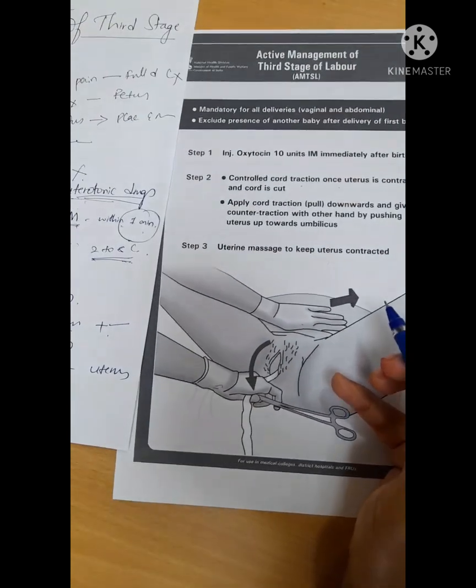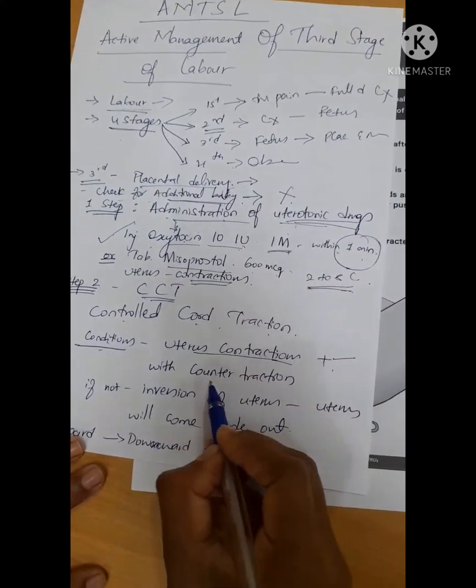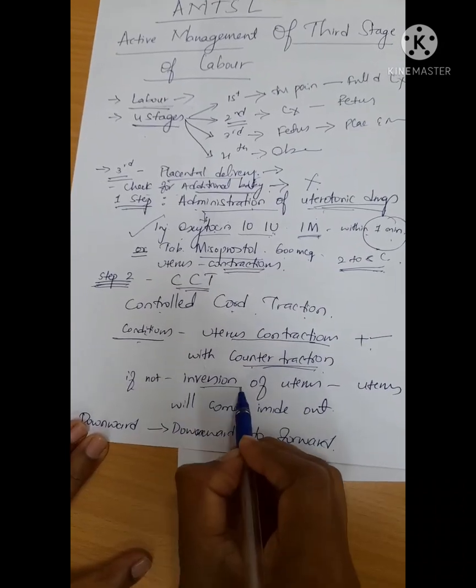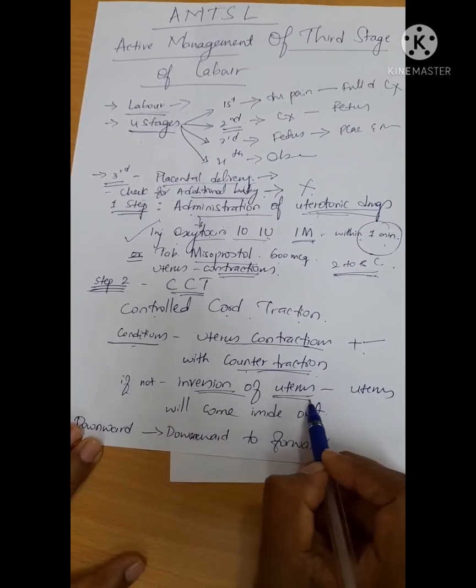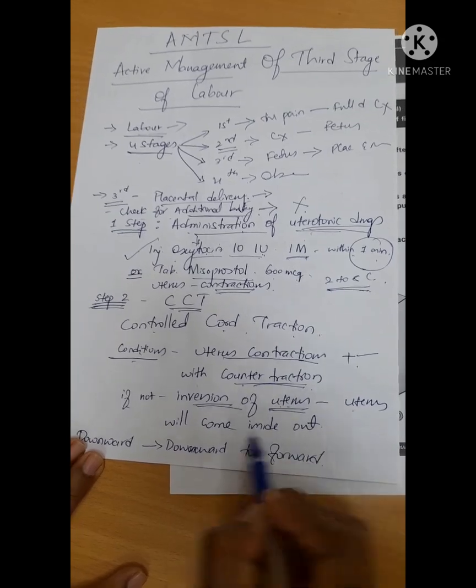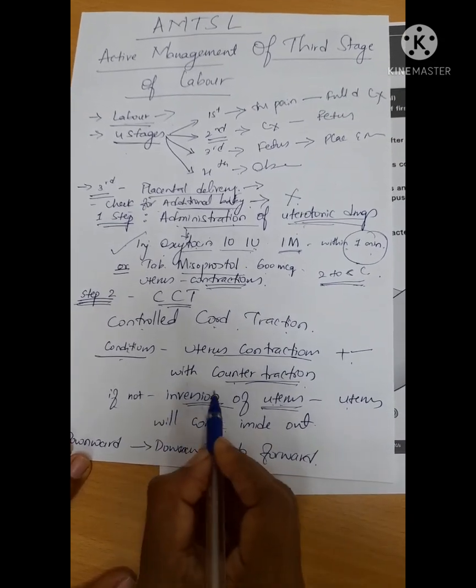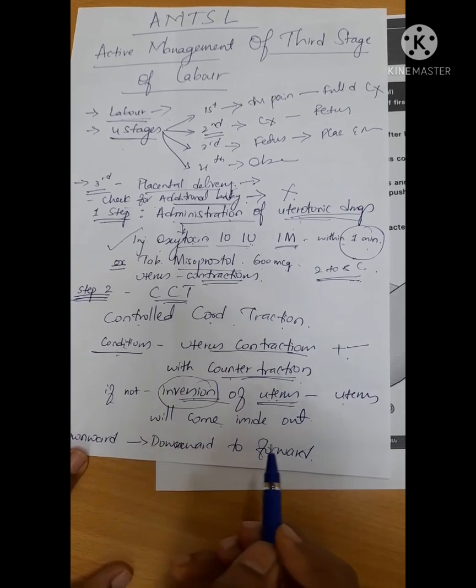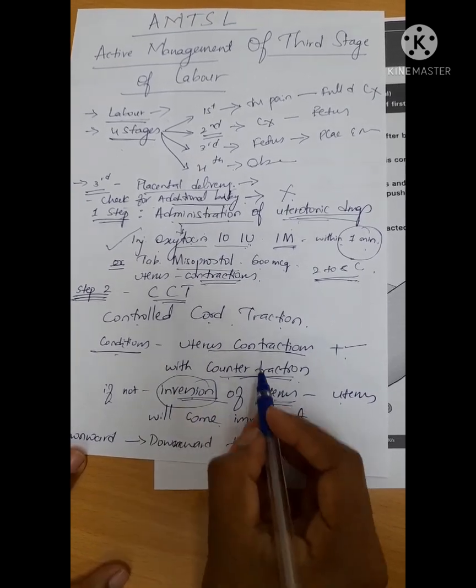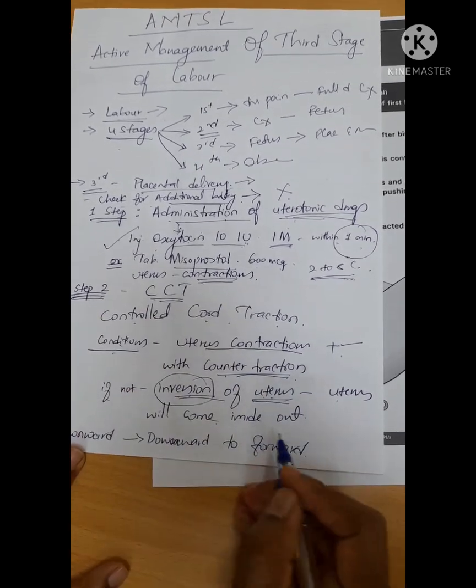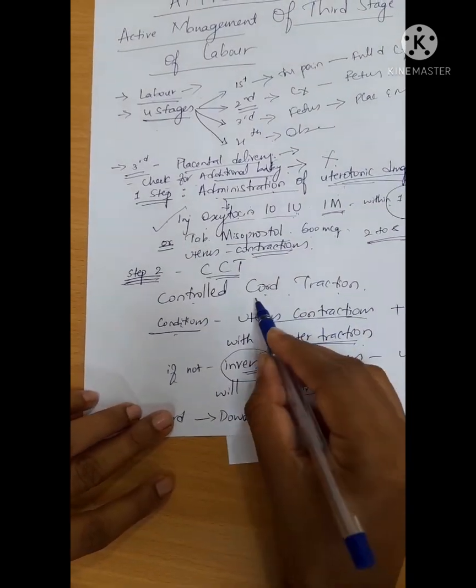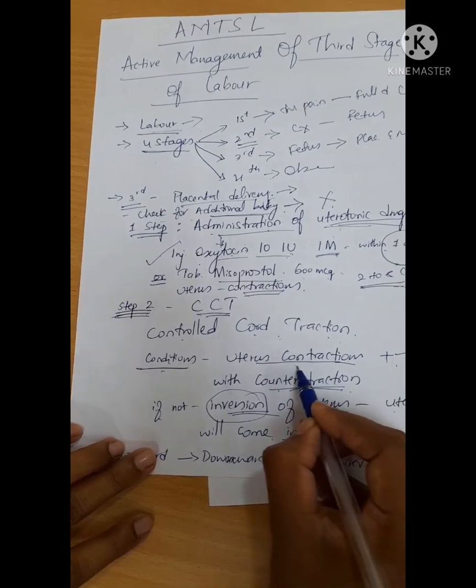You should give counter traction. If not, there will be inversion of uterus. Inversion of uterus means the uterus will come inside out. It's one of the third stage emergency obstetrical emergencies. If this happens, the attached placenta will come outside along with it.